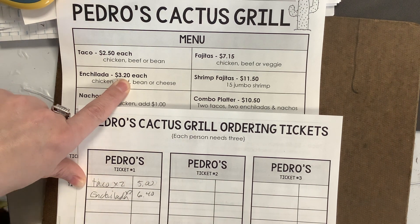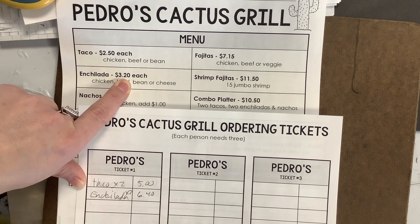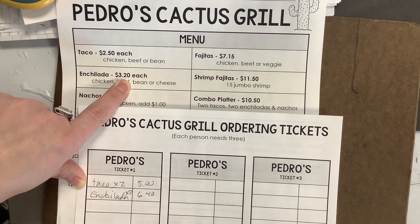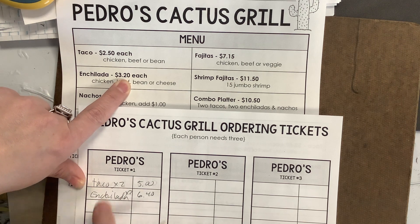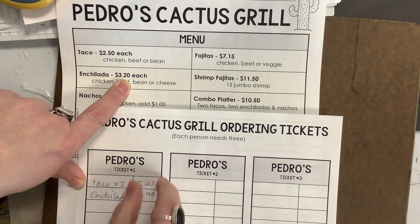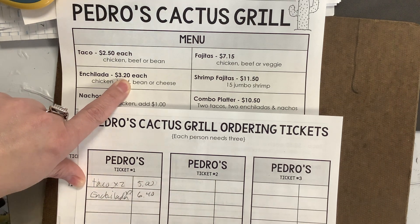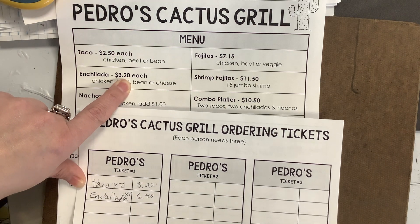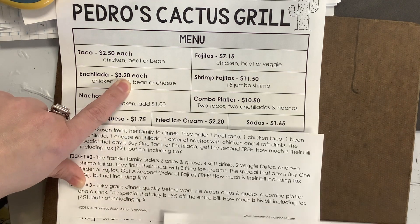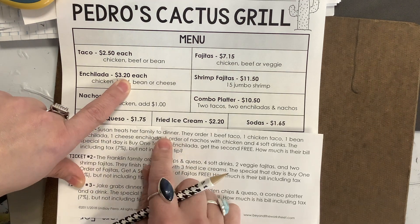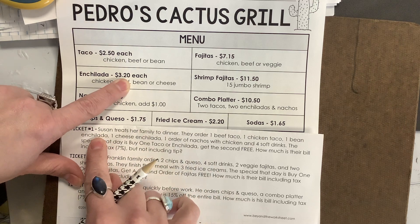I don't know if they intended to have you write each taco and each enchilada down separately — you can totally do that if you want to. You could write taco, taco, enchilada, enchilada and just put the single prices down. I'm just trying to be efficient.